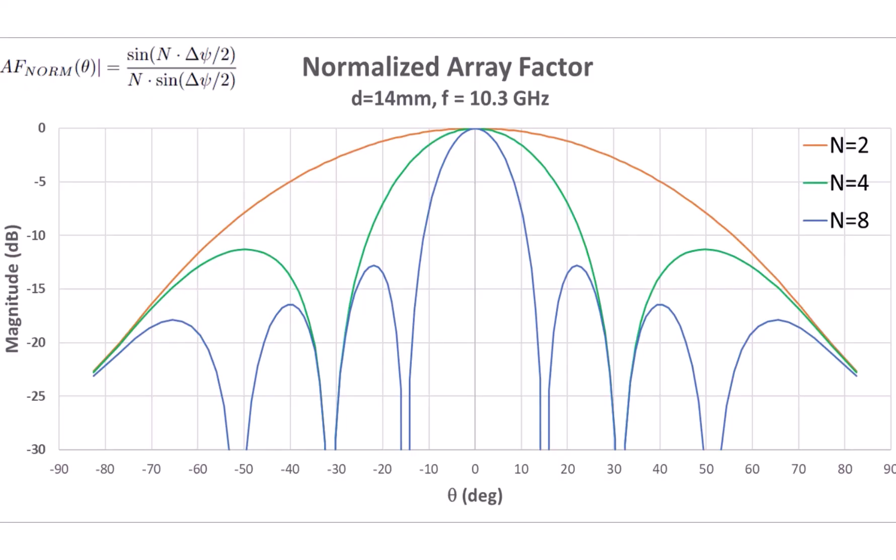So in this plot, n is the number of elements, and you can see that as the number of elements increases from 2 to 4 to 8, that the main lobe beam width narrows. And when we calculated what phase shift to apply, we were calculating that for the main lobe. But now you can see that in addition to a main lobe, we also get these side lobes.